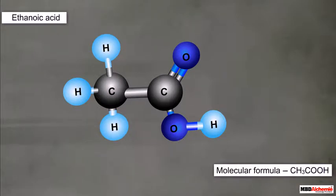The molecular formula of ethanoic acid is CH3COOH. It consists of a carbon atom that is attached to three hydrogen atoms and one carboxylic acid functional group.